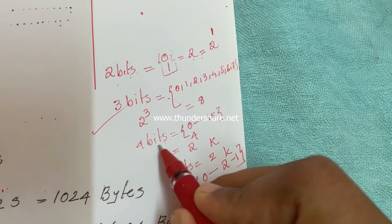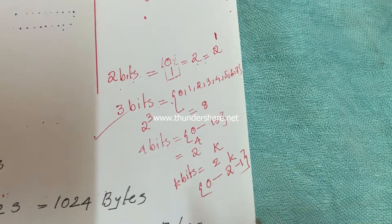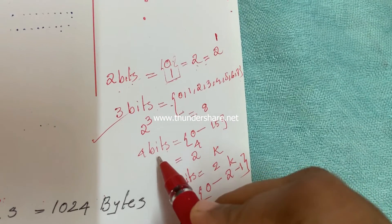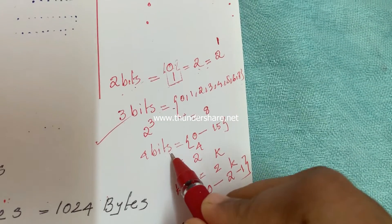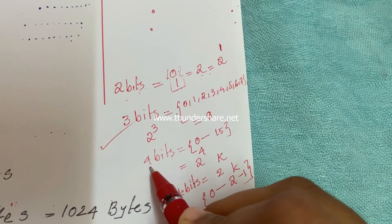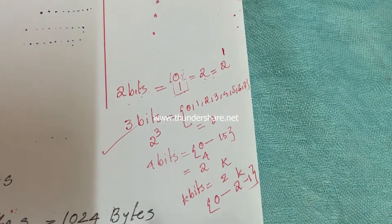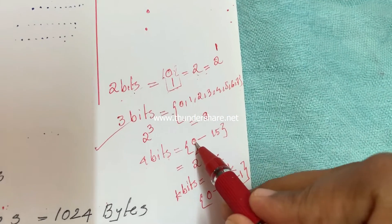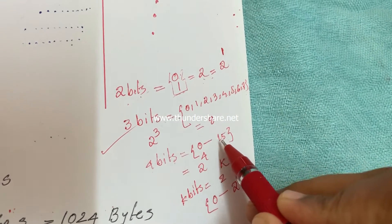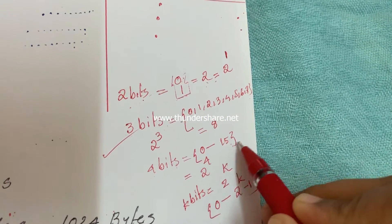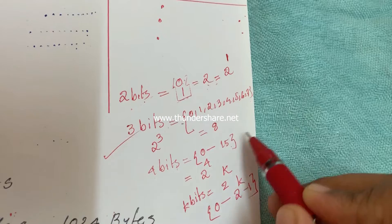Suppose we use 4 bits — how many values are possible? We can represent 16 different values using 4 bits. The values are 0, 1, 2, 3 up to 15, for a total of 16 values.